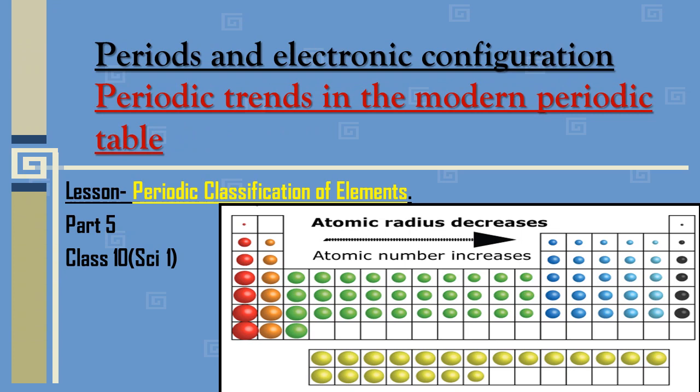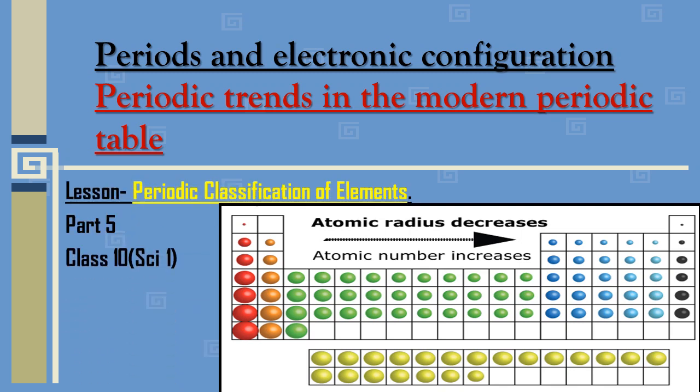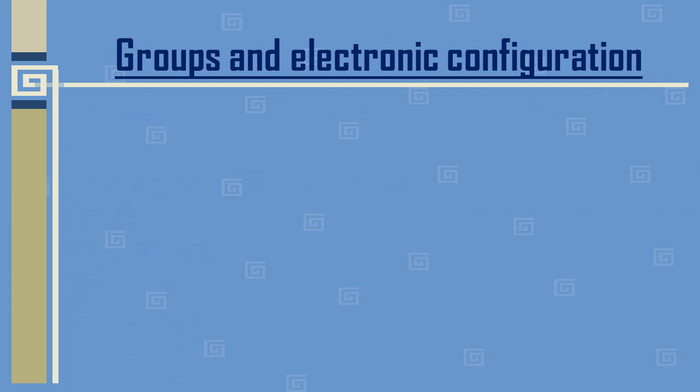Welcome students. Today we shall study the lesson on periods and electronic configuration, and the next topic is periodic trends in the modern periodic table. This is from the lesson 'Periodic Classification of Elements' and this is Part 5 video of this lesson. Now let's revise groups and electronic configuration.